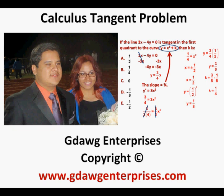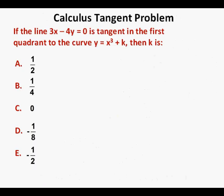Calculus tangent problem. This problem recently caused quite a bit of trouble for at least one of my better students. Here's the problem: if the line 3x minus 4y equals 0 is tangent in the first quadrant to the curve y equals x cubed plus k, then k is — and we'll give five multiple choice options for the value of k.